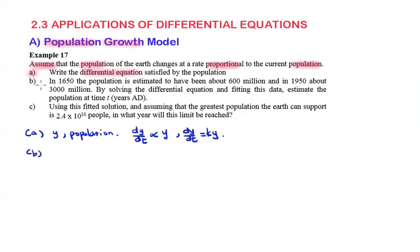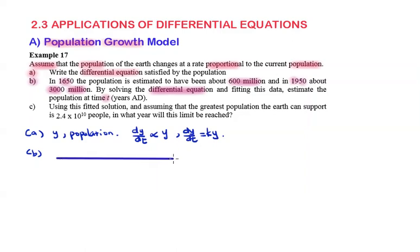In 1650, the population is estimated to have been about 600 million, and in 1950, about 3,000 million. By solving the differential equation, estimate the population at time t. First of all, let us represent this information on a timeline.